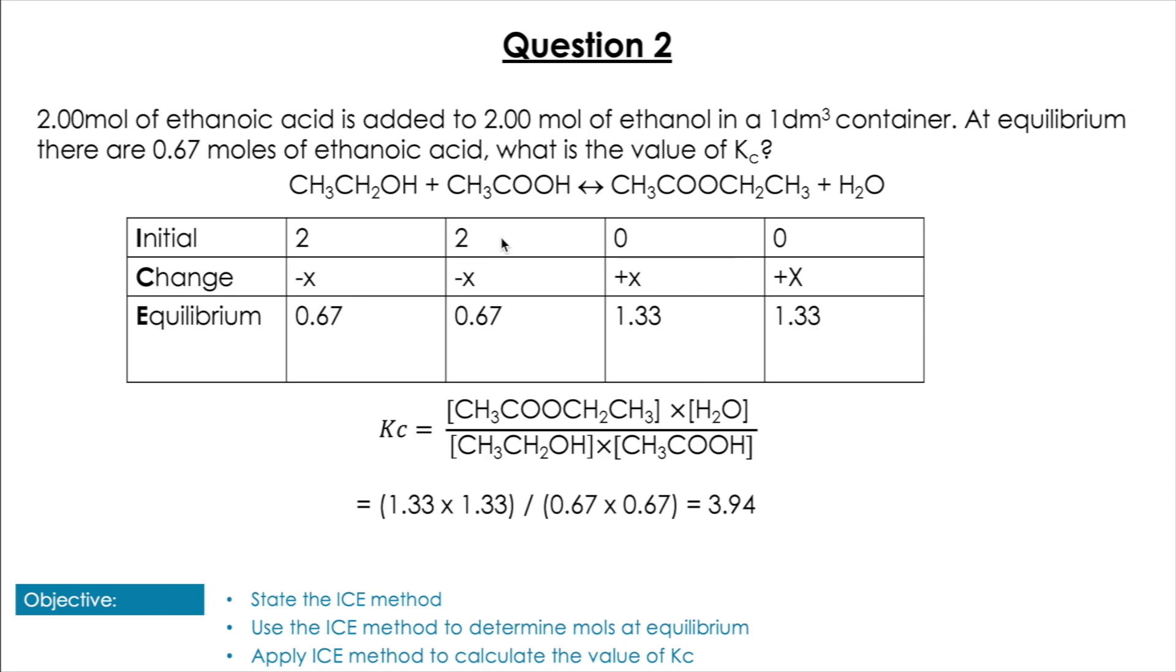Now we plug these into the expression for Kc. We get (1.33 × 1.33) ÷ (0.67 × 0.67), which gives us a Kc value of 3.94.